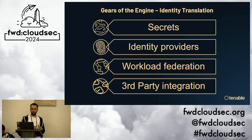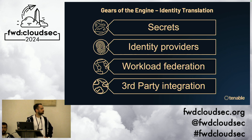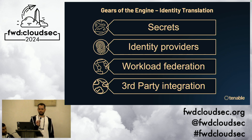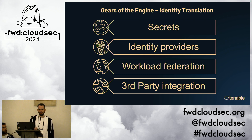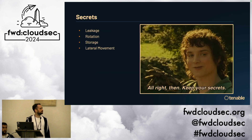The first category is secrets, which we'll dive into further. The second is identity providers themselves. The third is workload federation mechanisms — how you federate applications from one cloud to another or from on-prem to cloud. And the fourth is third-party integrations, which we also see as vectors for cloud hops. If you're running a production cluster in AWS but connecting to third-party roles in a customer's GCP account, that's also a connection that someone may end up exploiting.